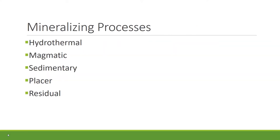There are five main mineralizing processes that take place in the crust to concentrate elements: hydrothermal, magmatic, sedimentary, placer, and residual. Let's look at these in more detail.